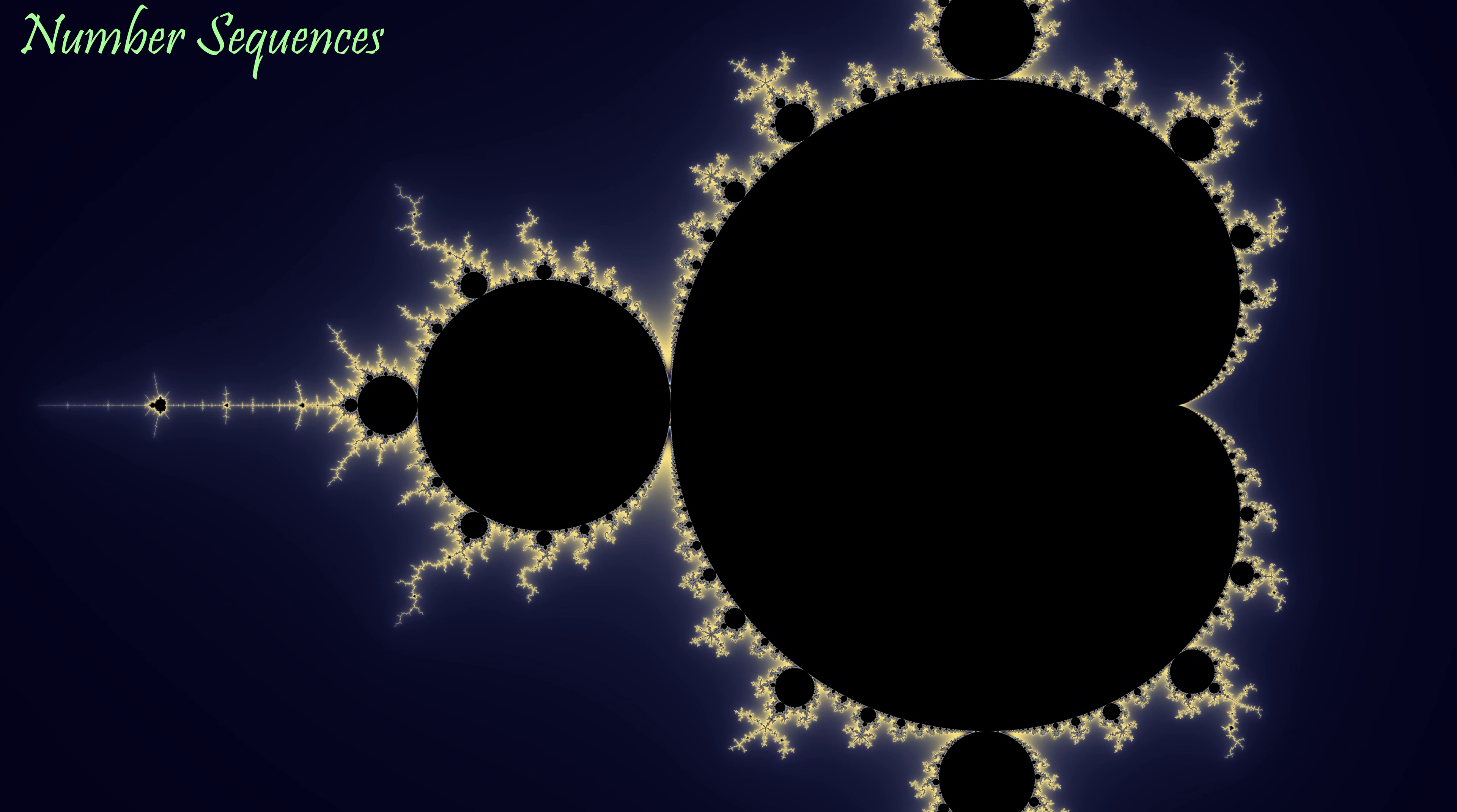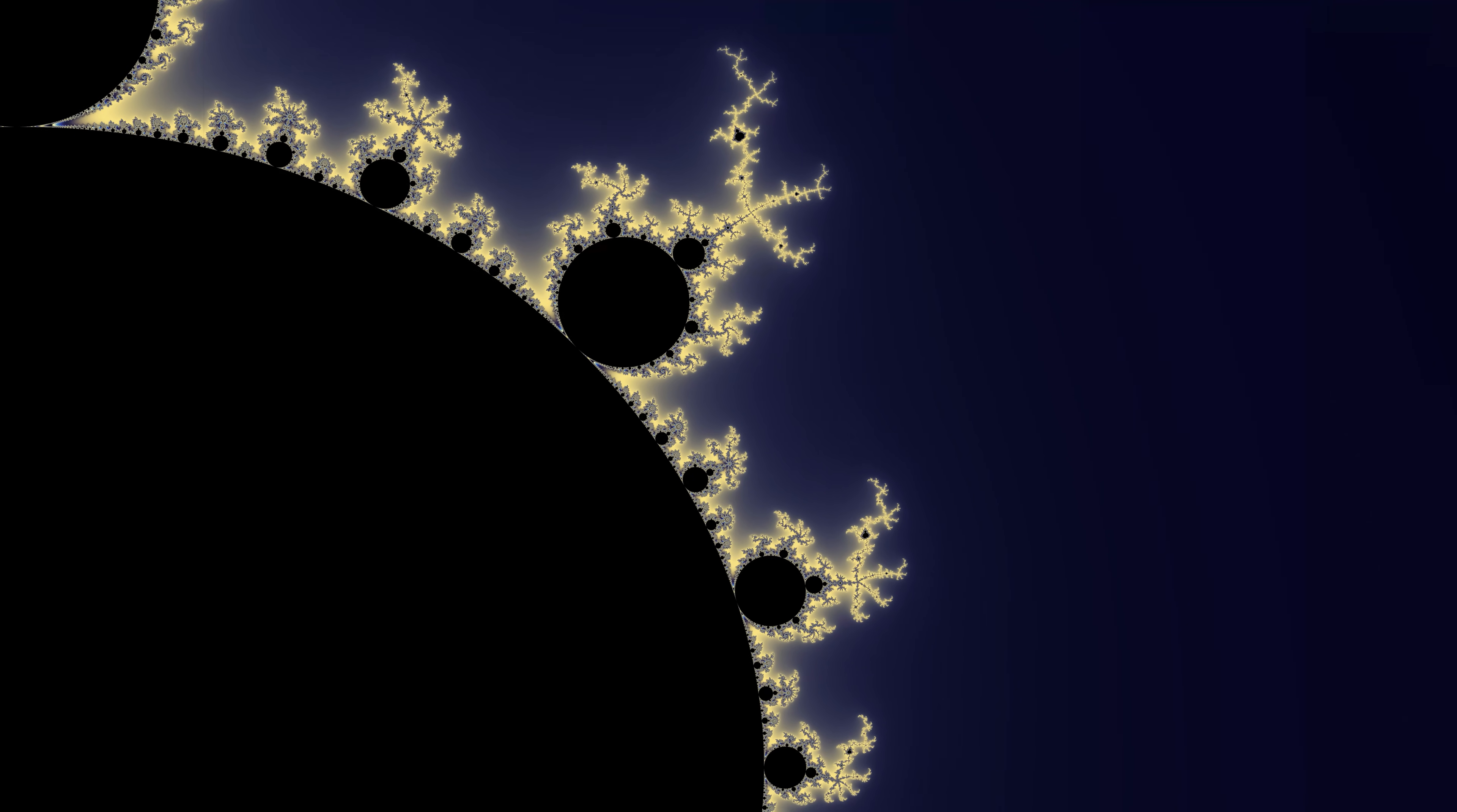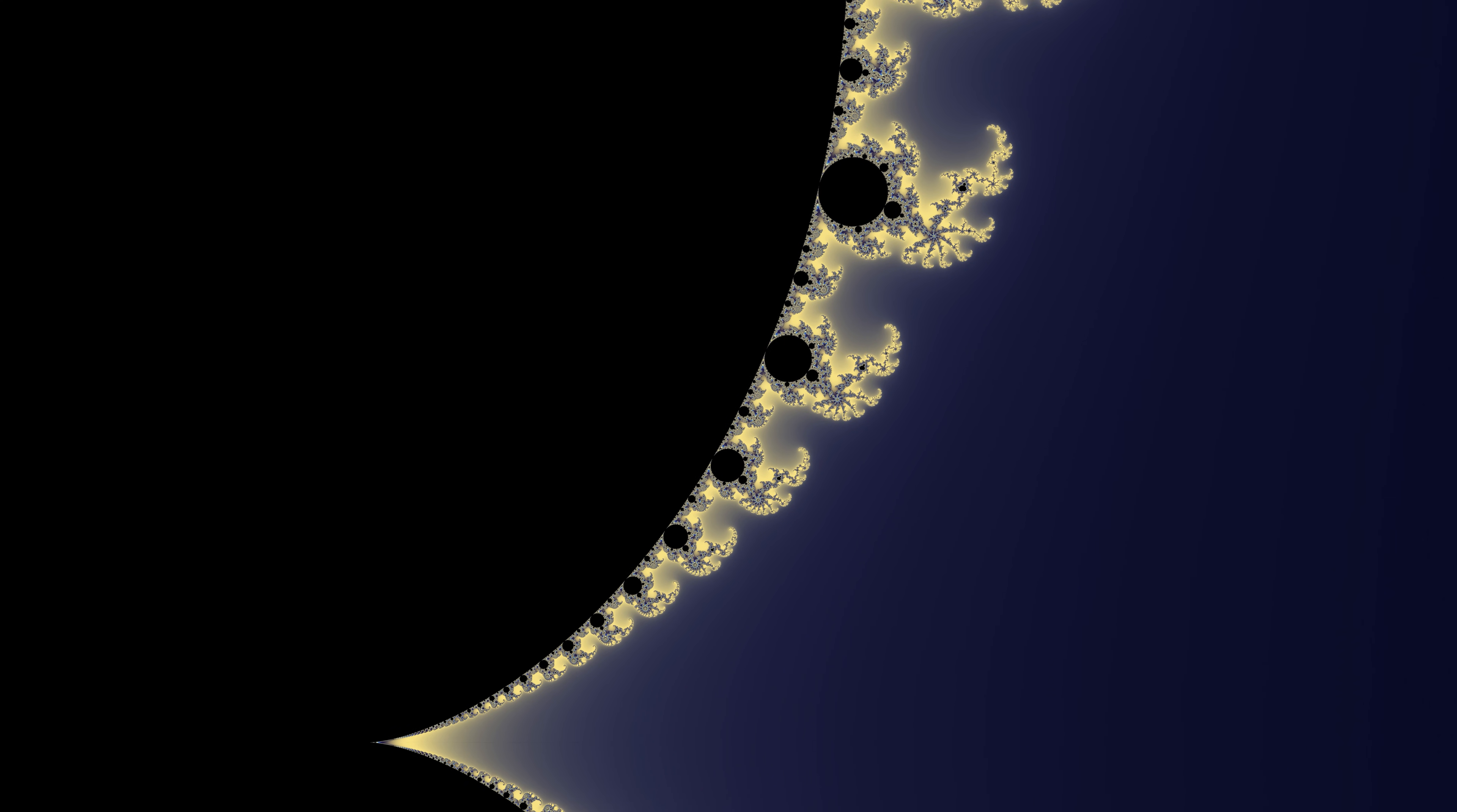So let's find our first sequence. Start with the biggest bulb, which is the period two circle. Now head in either direction. The next biggest bulb is the period three bulb. The next biggest is the period four. And so on. We count by the natural numbers all the way to infinity deep inside the crack.